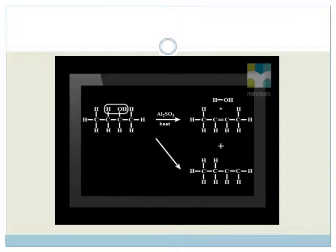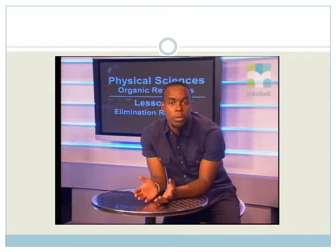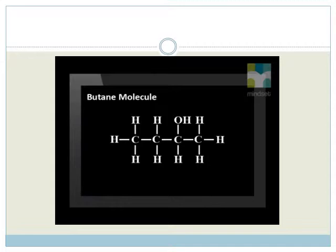When we compare the two products, we find that both are actually made. We also find that more but-2-ene is made. There is a way to predict which product is more likely to form. This is very similar to the rule for addition. The double bond forms between carbon atoms that have less hydrogen atoms attached to them. Here is the butane molecule. We can see on the structure of butan-2-ol that the carbon atoms that are highlighted have the least hydrogen atoms attached.